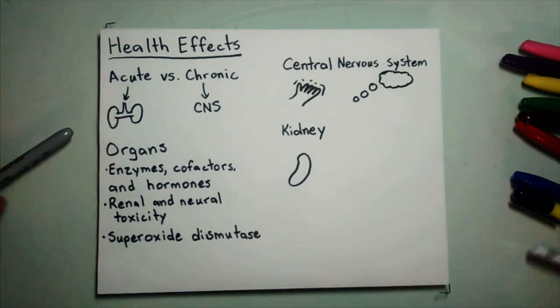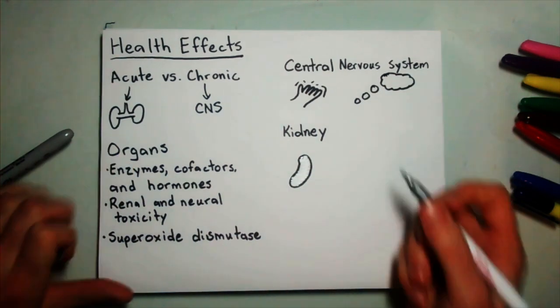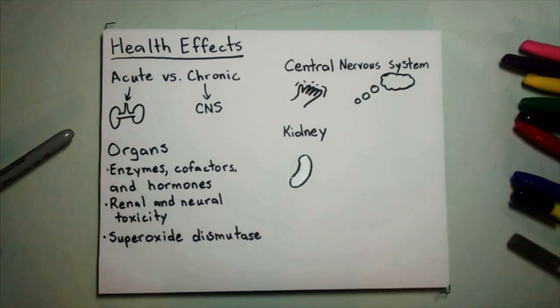The highest concentrations of mercury are found in the kidneys. Mercury binds to thiol, which leads to apoptosis and subsequent kidney damage.